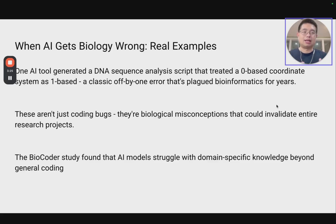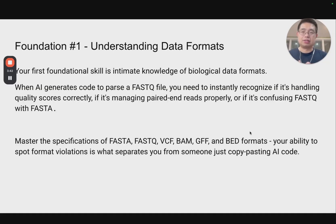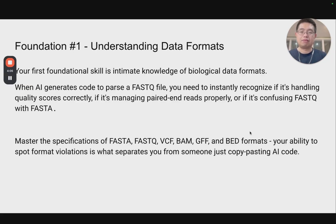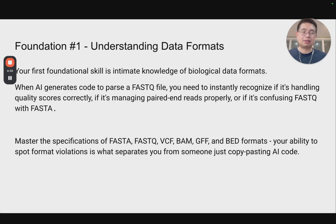Because AI is trained on data from the web, and many of those codes were wrong to begin with, sometimes AI cannot figure that out. Those are the five foundations. Let me start with the first one: understanding data formats. Bioinformatics is notorious for various different file formats. For example, you have FASTQ files and FASTA files. When AI generates code to parse FASTQ files, you need to quickly recognize if it's handling the quality scores correctly, if it's managing paired-end reads properly. You need to understand file formats — single-end versus paired-end, FASTA versus FASTQ — and there are many other file formats: VCF, BAM, GFF, and BED files. You should start with those foundational knowledges rather than just copy-pasting AI code.